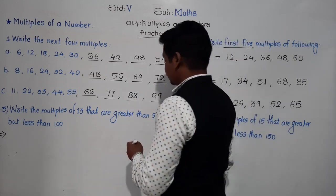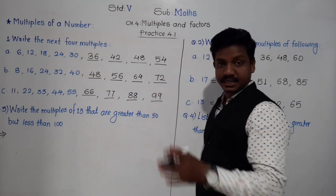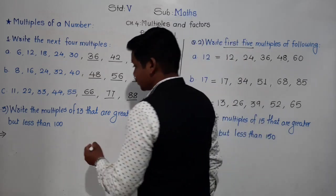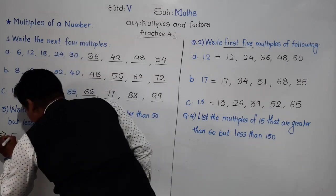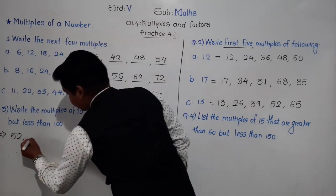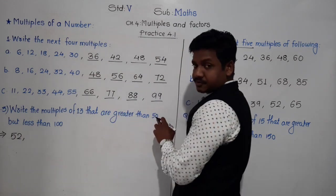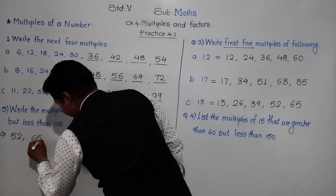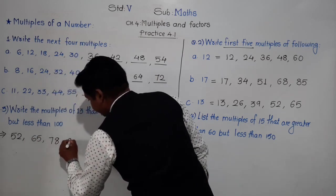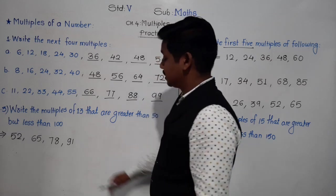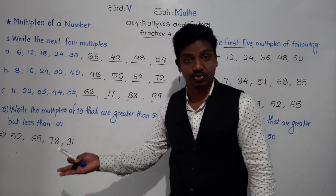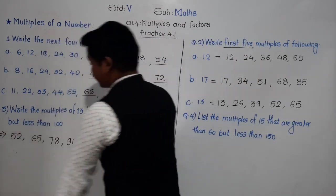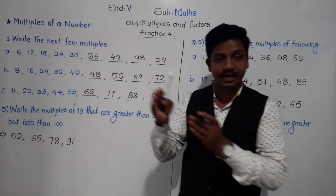Since the number of multiples is uncountable, the question specifies the range. 13×3=39, which is less than 50. 13×4=52, which is greater than 50 — so we start with 52. Then 65, 78, and 91. The next multiple is 13×8=104, which is greater than 100, so we stop there.